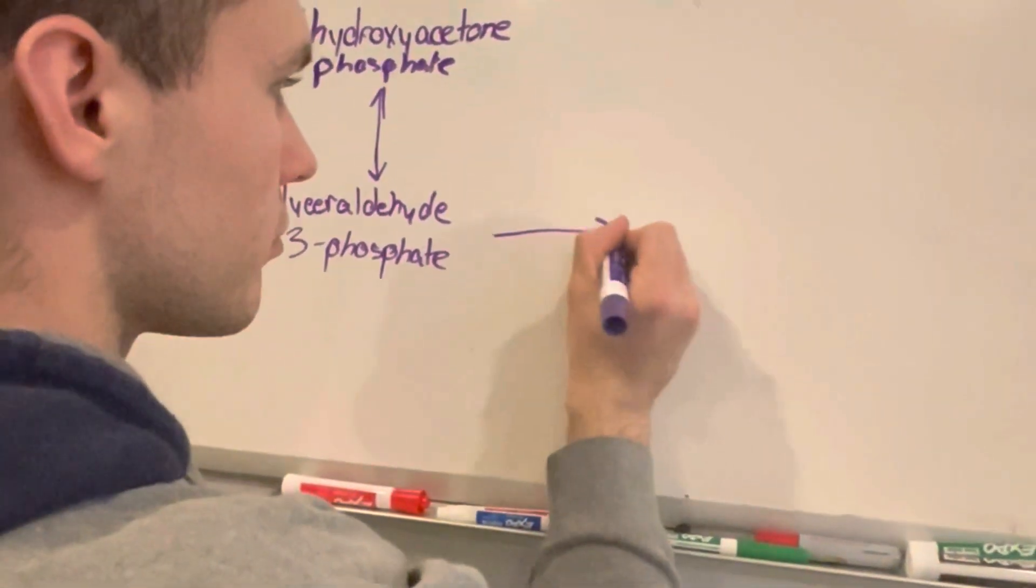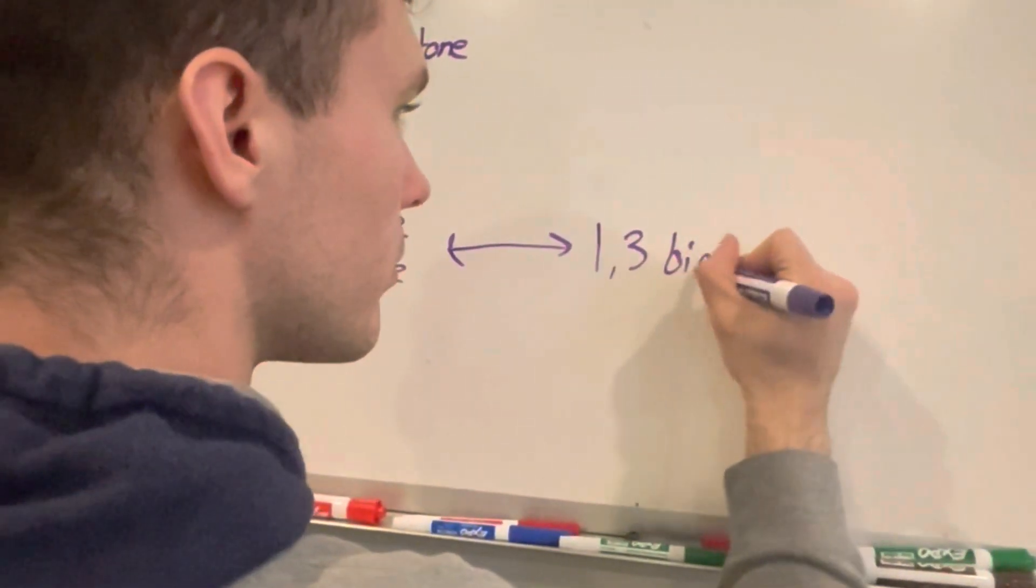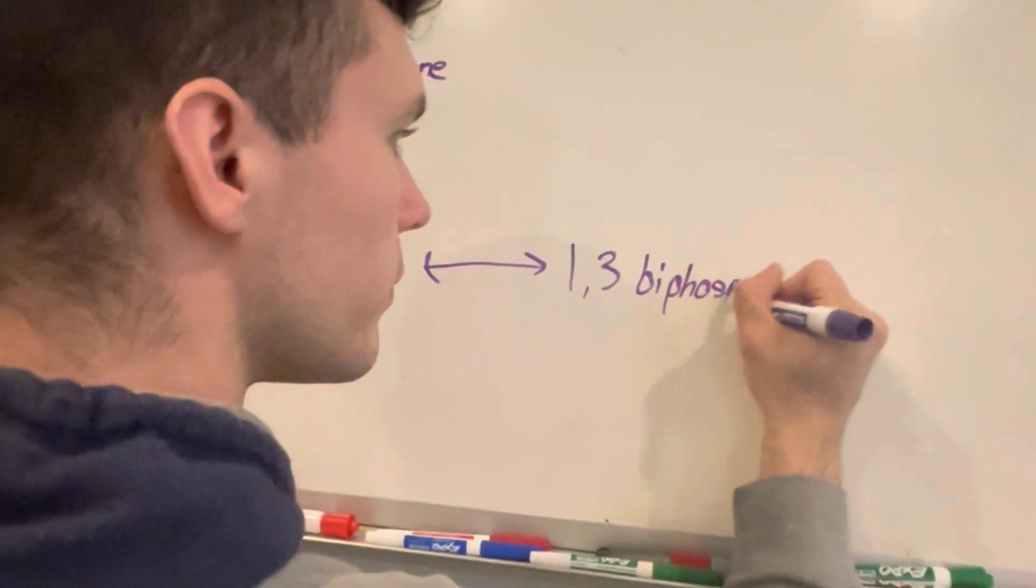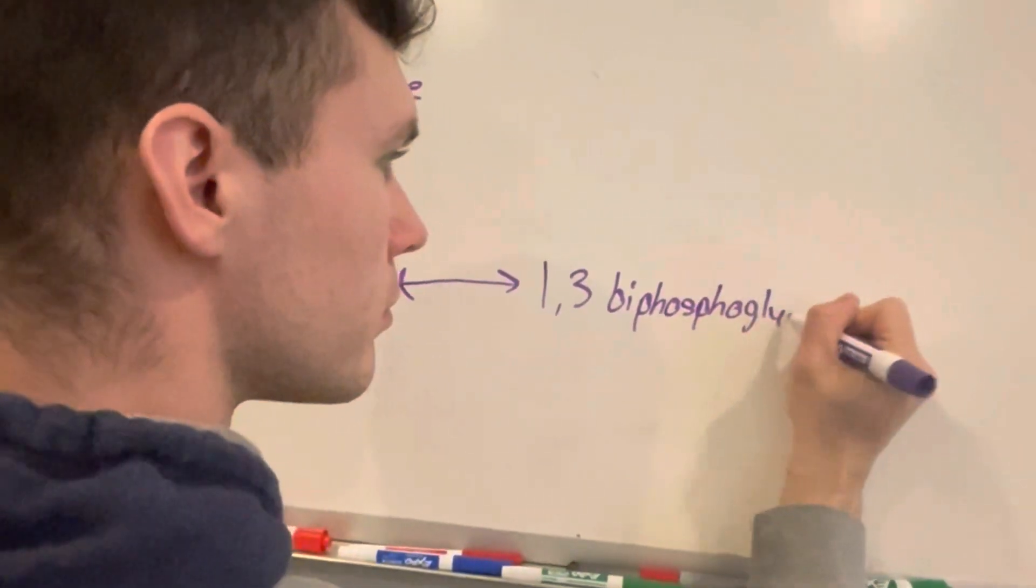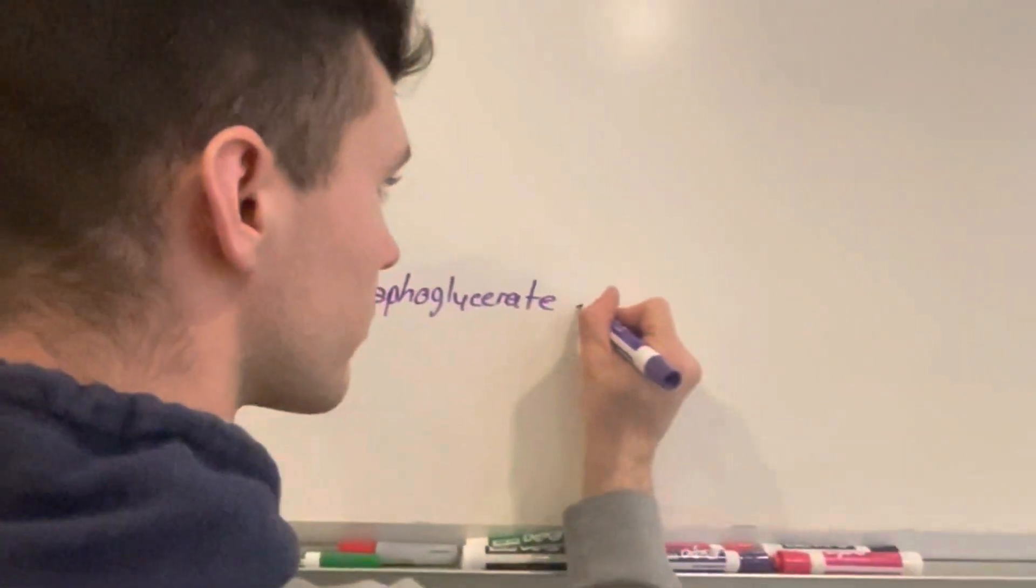The reversible reaction turns it into 1,3-bisphosphoglycerate. From another reversible reaction, it then turns into 3-phosphoglycerate.